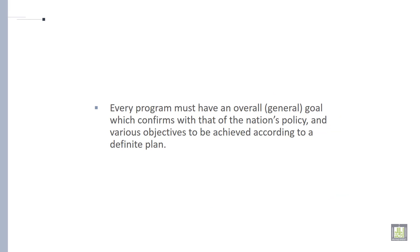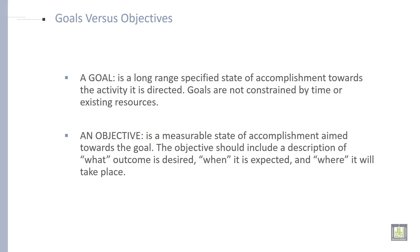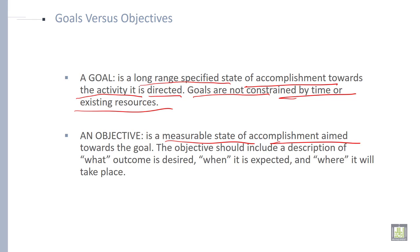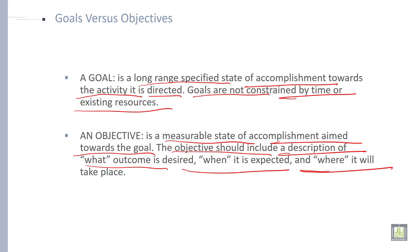Every program must have an overall goal which conforms with the nation's policy, and various objectives to be achieved according to a definite plan. It is important to know the difference between goals and objectives. A goal is a long-range specified state of accomplishment towards which the activity is directed. Goals are not constrained by time or existing resources. While an objective is a measurable state of accomplishment aimed towards the goal. The objective should include a description of what outcome is desired, when it is expected, and where it will take place.